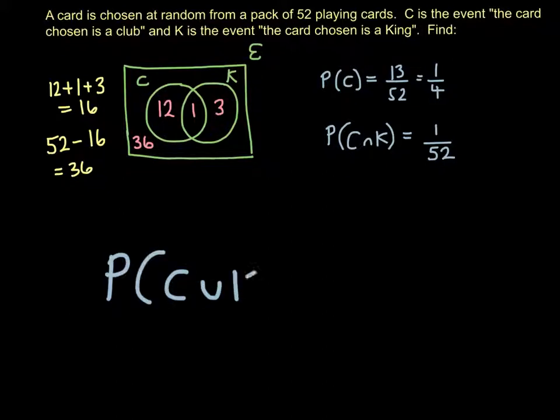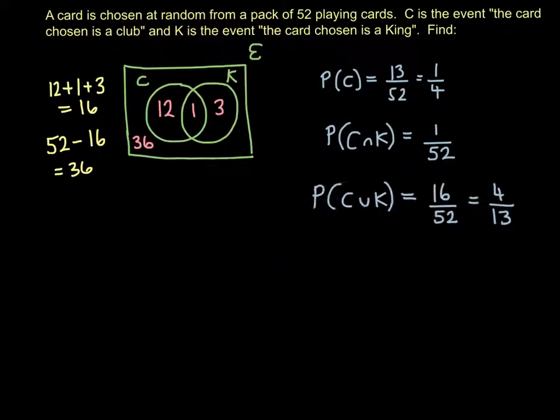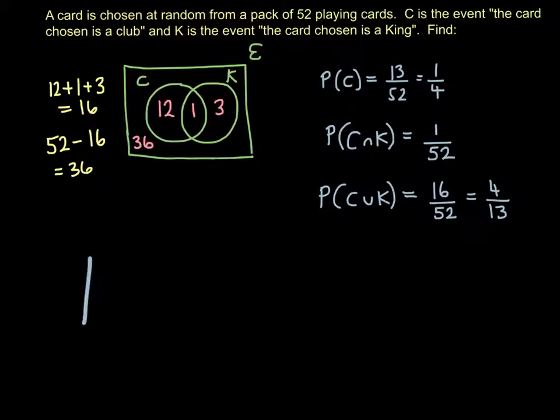Probability of C union K. So that's the probability, basically, of picking a card that's either a club or a king or both. So the union is 12 plus 1 plus 3, is 16 over 52. Then if you can, you want to simplify them as well and cancel them down. So again, quite easy at the moment.